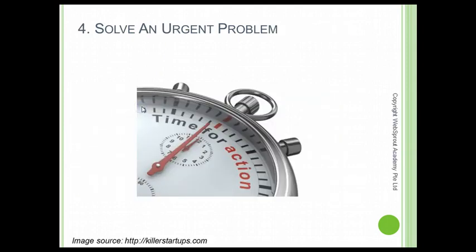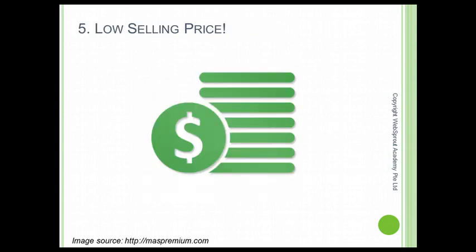Fourth, the product you choose to promote must solve an urgent problem. What you're doing here is showing the product to people who are actively searching — if they just close the window, there goes your commission. You want to make sure you're helping them solve an urgent problem, because if there's no urgency, there's no need for them to buy at that time.